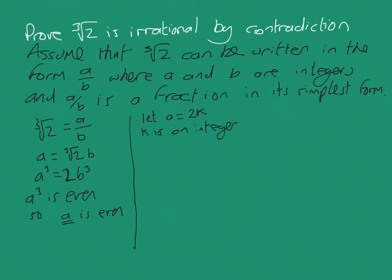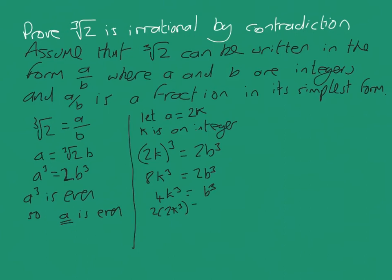Be thorough. So we can then say, okay, well, 2k cubed equals 2b cubed. 2k all cubed equals 2 lots of b cubed. Well, 8k cubed equals 2b cubed. Let's simplify a little bit.